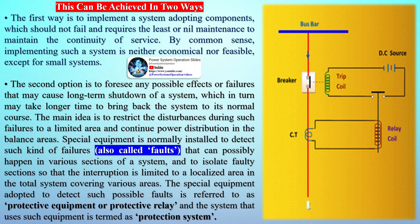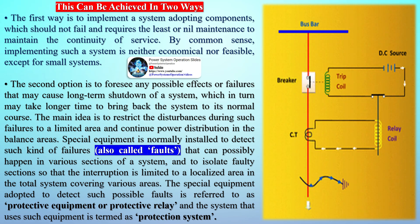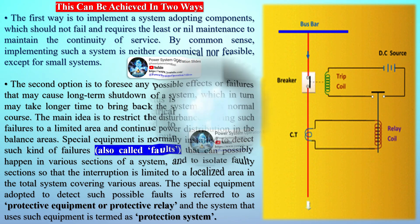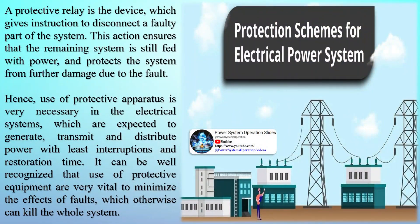The main objective of using power system protection is to detach the faulty section from the system to make the rest of the portion work without any disturbance. In addition, it is used for the protection of the power system and to prevent the flow of fault current, helping to prevent the continuation of flow by quickly disconnecting the short circuit. Protection relays are an important characteristic of power system protection and help to isolate the faulty part of the electrical system.